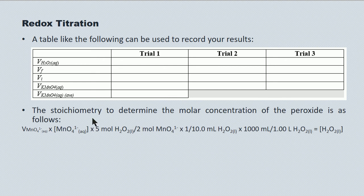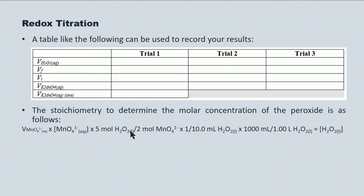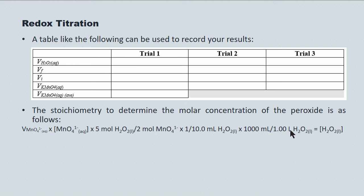The stoichiometric calculation to determine the molar concentration of the peroxide looks like this. We start with the average volume of the permanganate times its molar concentration (determined in Part 1) — that's C times V, giving moles of permanganate. Multiply by the molar ratio 5 mol peroxide to 2 mol permanganate. Then divide by the volume of peroxide used — each aliquot was 10.00 mL — converting milliliters to liters with 1000 mL per liter. Note that if you record the permanganate volume in milliliters, you'll need a multiplier to convert it to liters first.